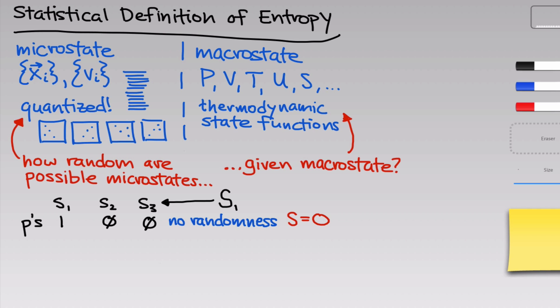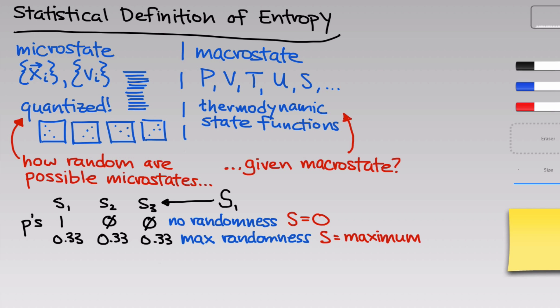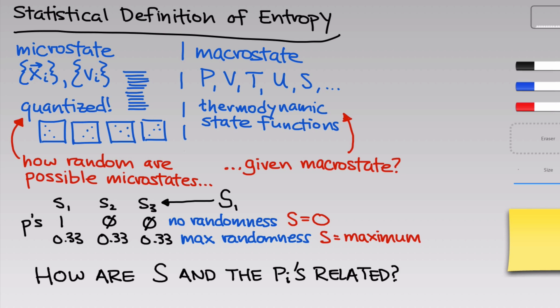Now let's look at a different probability distribution. If all three microstates had equal probabilities of 1/3 each, we can't know which microstate the system is actually in, so the entropy is at a maximum and the randomness of the microstates is at a maximum. The probability distribution over the microstates figures deeply into the statistical definition of entropy. We need to flesh out mathematically how entropy and the individual probabilities of specific microstates are related.